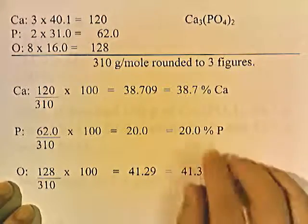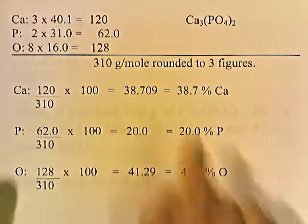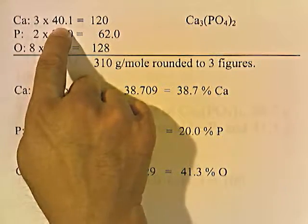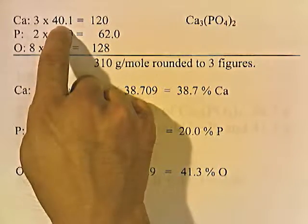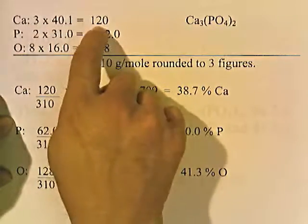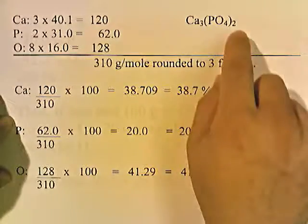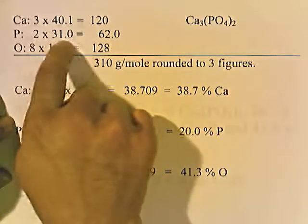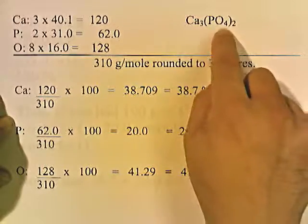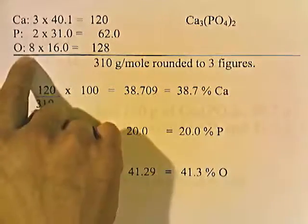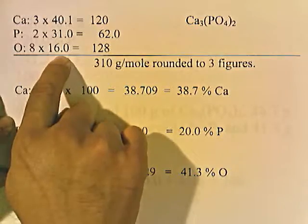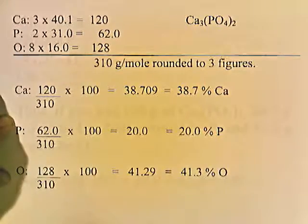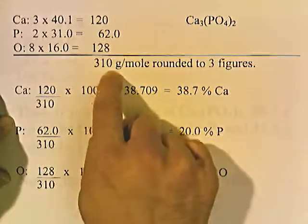Here's the formula for calcium phosphate. We have three calciums — on the periodic chart, calcium is listed as 40.1 grams per mole. Three times 40.1 is 120, a rounded value. Phosphorus: there are two phosphoruses, and phosphorus weighs 31 grams per mole. Two times 31 gives 62. Then oxygen: four times two is eight oxygens, times 16 — 16 is a rounded number from the periodic chart. Eight times 16 is 128. Adding all these together, we get 310 grams per mole.